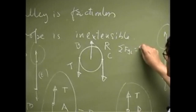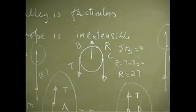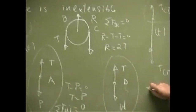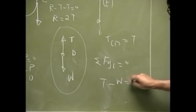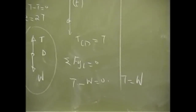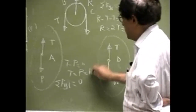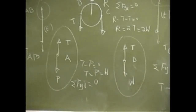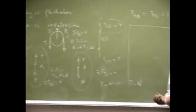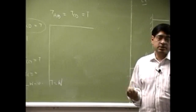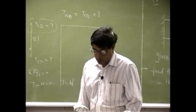Summing forces in the y-direction for the pulley gives: R minus T minus T equals zero, so the reaction R equals 2T. Summing forces at point D in the y-direction gives: T minus W equals zero, so T equals W. Therefore R equals 2W, and your applied force P equals W. By isolating points A, D, and the pulley, we find all the forces when the system is in equilibrium.